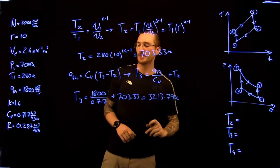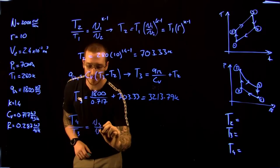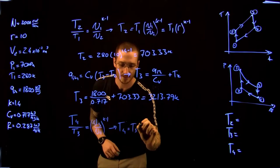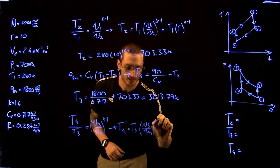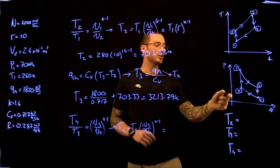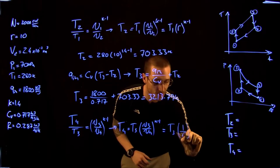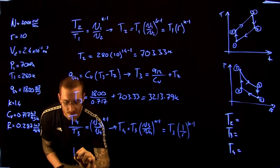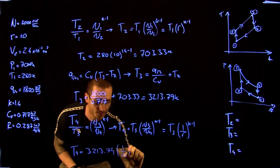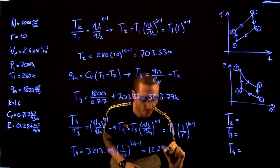From 3 to 4, we again have an isentropic process: T4/T3 = (v3/v4)^(k−1). Since v3 = v2 and v4 = v1, this simplifies to T4 = T3 × (1/R)^(k−1) = T3 × (1/10)^0.4. So T4 = 3,213.79 × (1/10)^0.4 = 1,279.43 K.